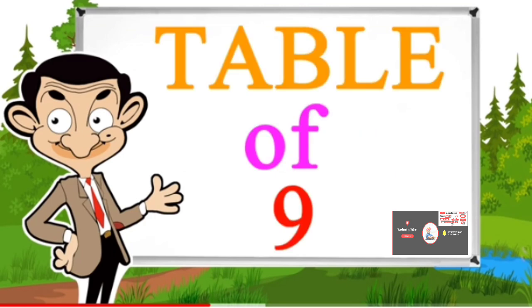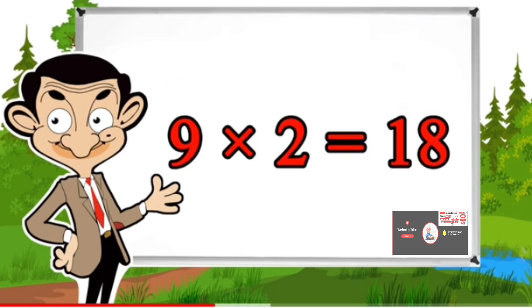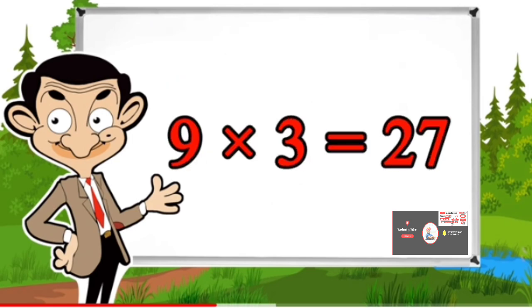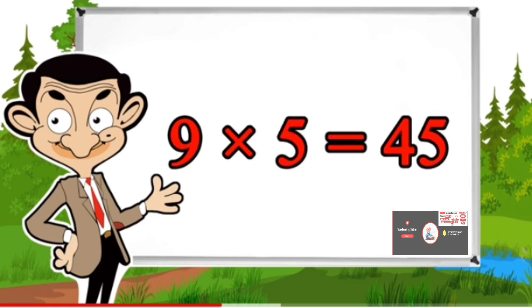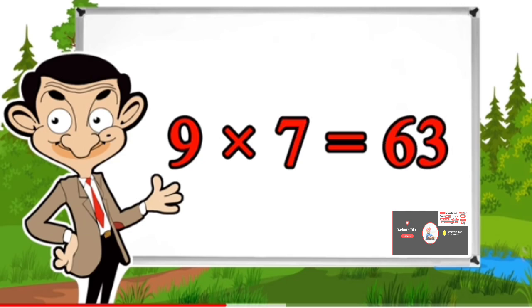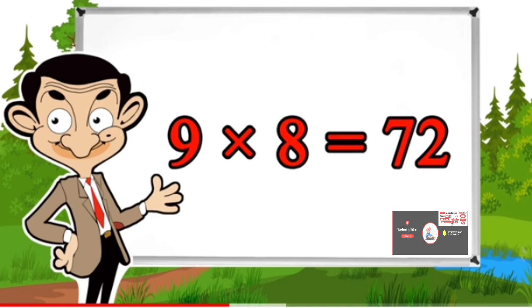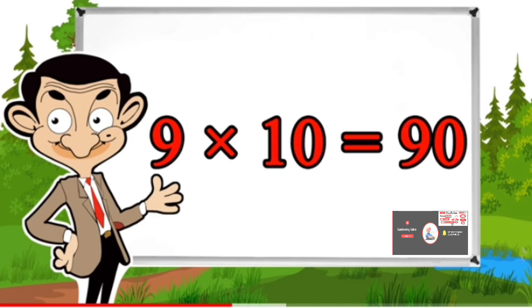Table of 9: 9×1=9, 9×2=18, 9×3=27, 9×4=36, 9×5=45, 9×6=54, 9×7=63, 9×8=72, 9×9=81, 9×10=90.